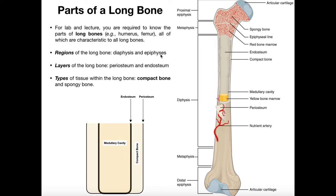Epiphyses is plural — there are actually two epiphyses: a proximal epiphysis and a distal epiphysis. The epiphysis is the end of a long bone. The proximal epiphysis is the one closer to the torso, whereas the distal epiphysis is further from the torso. On the femur, the proximal epiphysis is where it inserts into the pelvis, and the distal epiphysis is what articulates with the knee joint — that is, the tibia.